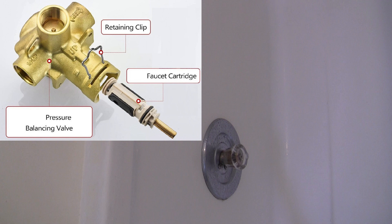If this cartridge does not seal properly, it will allow a slow trickle of water to continue upwards to the shower head even when the faucet handle is off.